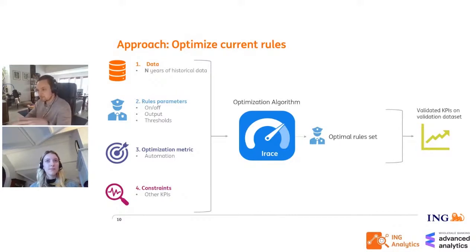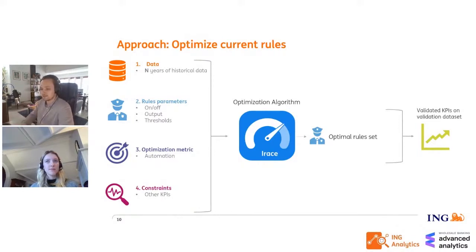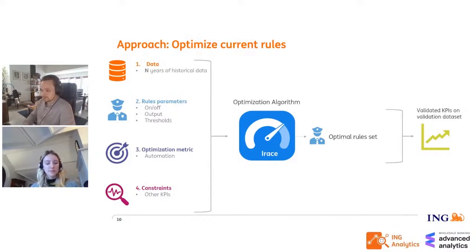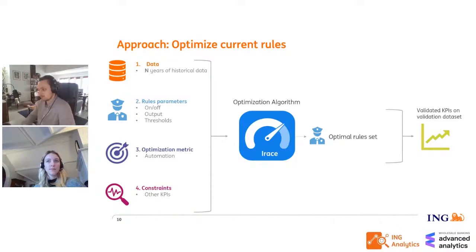The general top-level approach: we take all these different aspects, put them into IRACE, let it run for a while, and the output is an optimal set of parameters and an optimal set of rules. Then we validate on a validation dataset, checking all KPIs — both the automation objective and all other key performance indicators. The main difference from machine learning is that our output is not a trained model — it's these are the rules you should keep active in the decision engine, which is then a very easy change to redeploy.